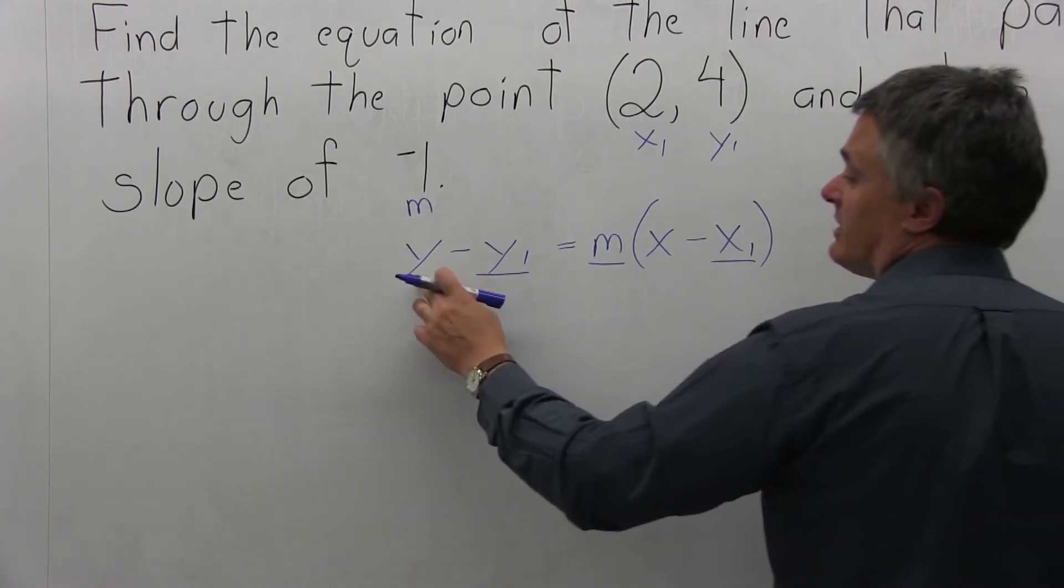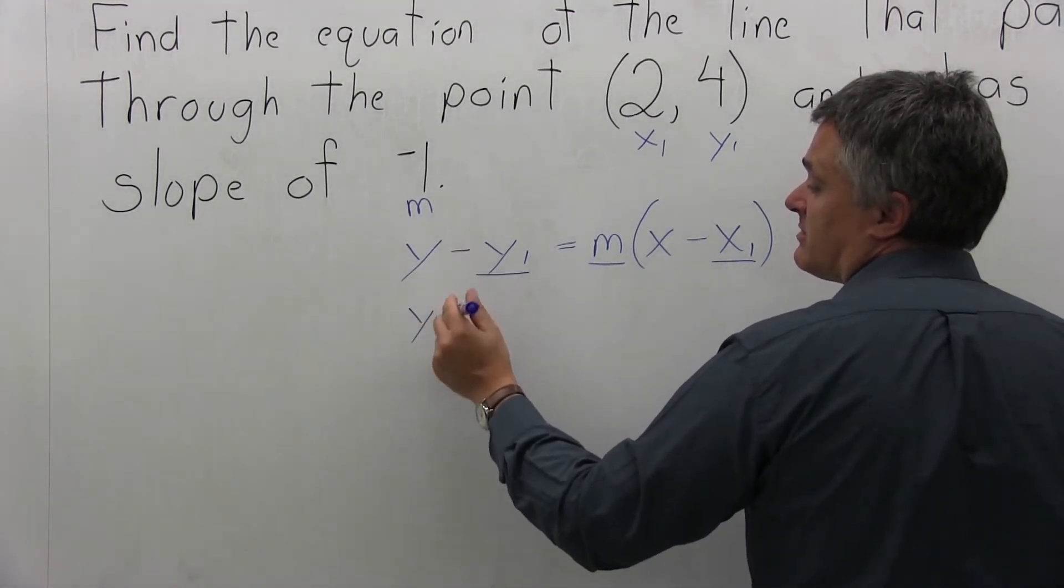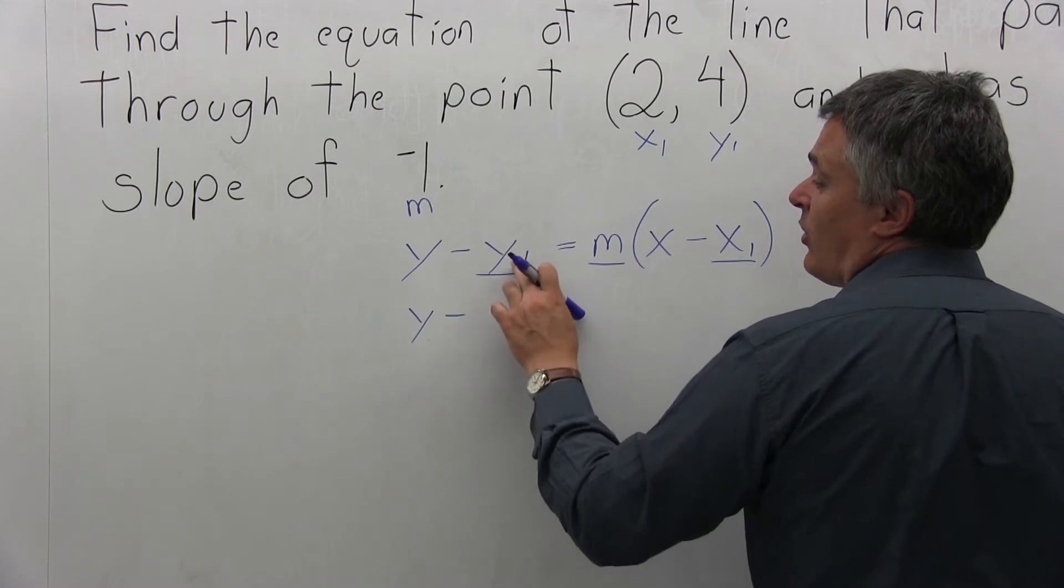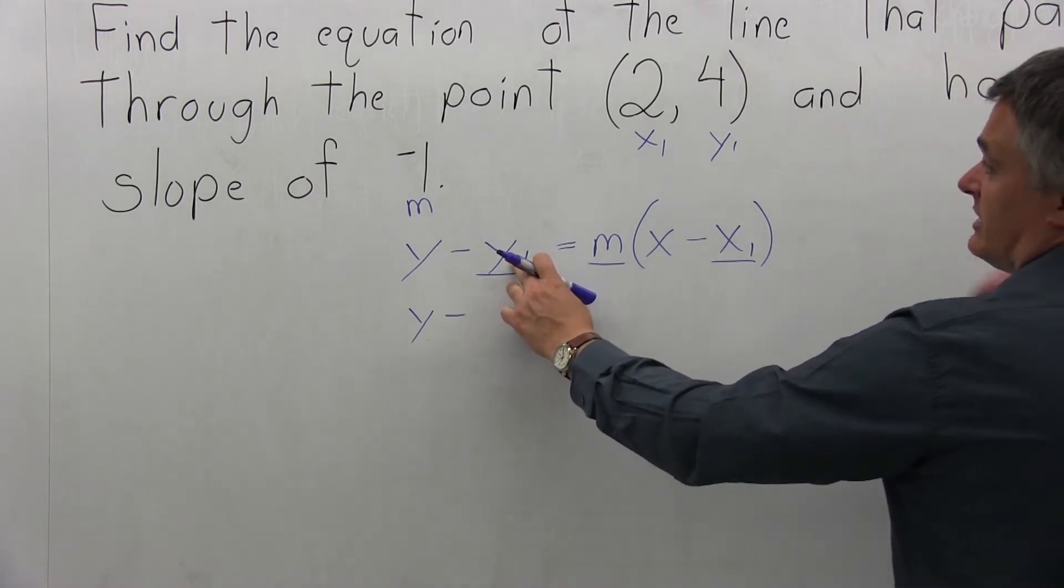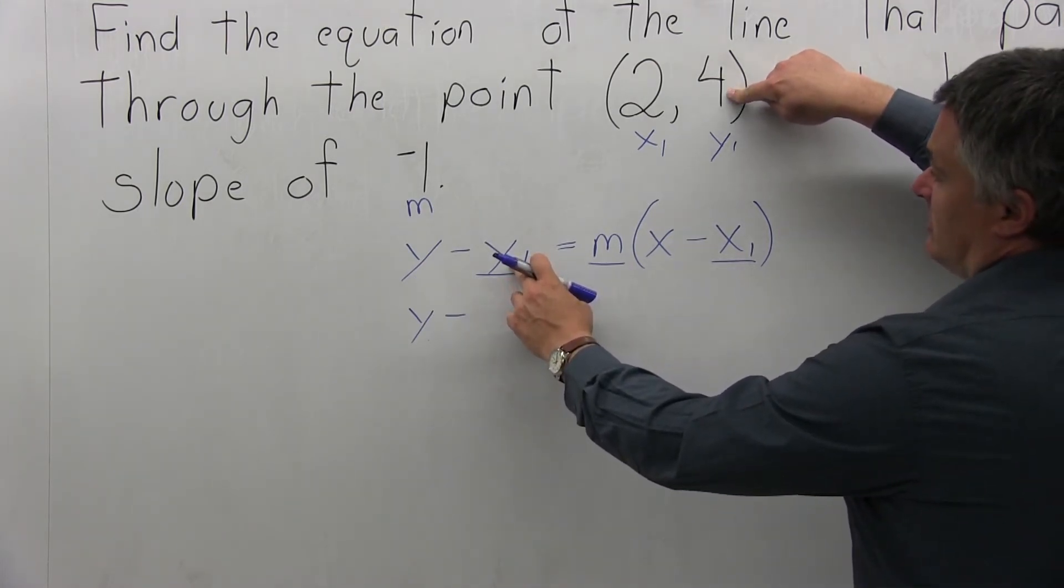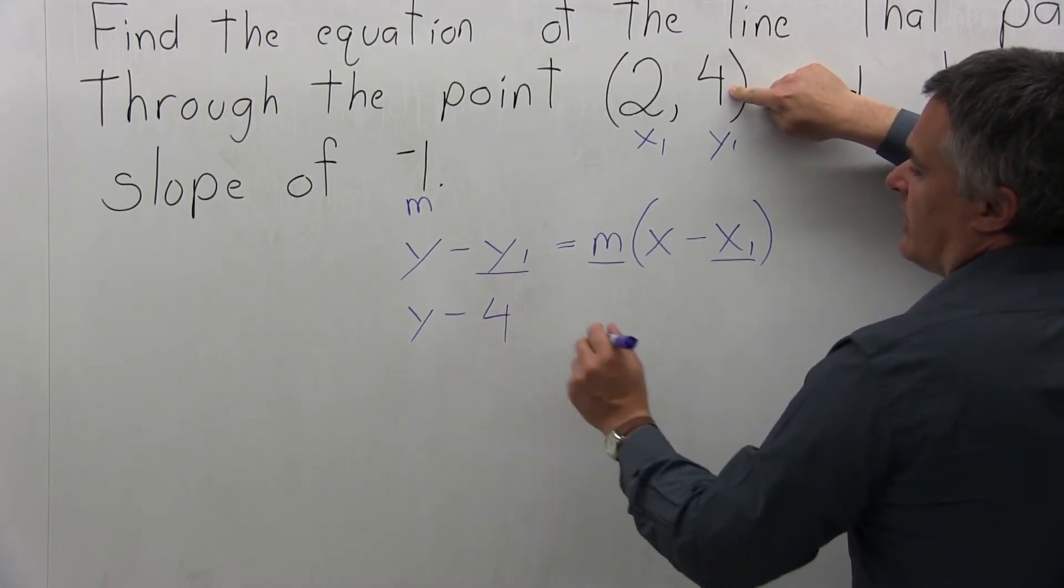The first piece is y, it does not have an underline, it will stay. The next piece, the minus, will stay. y1 has an underline, so it needs a number value, which is going to be 4. So 4 goes in for y1, then we have equals.